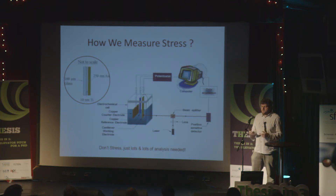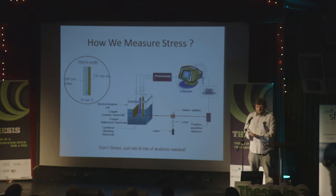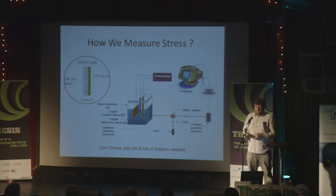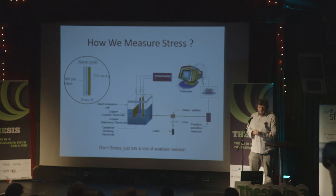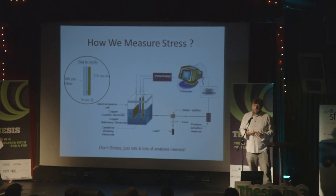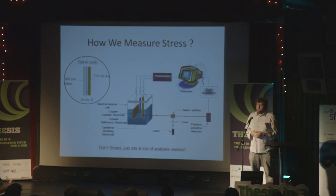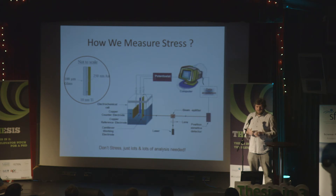So how do we measure? There are loads of different ways of doing it, but the one we found best suitable is this setup here. It has two aspects: on the left-hand side there's an electrical setup, and on the right-hand side we have an optical setup. The left consists of a three-electrode cell — predominantly used in the electrochemicals industry — with a counter, a reference, and a working electrode. The counter and reference are copper, because it's based on a copper-based solution.